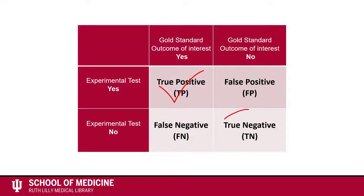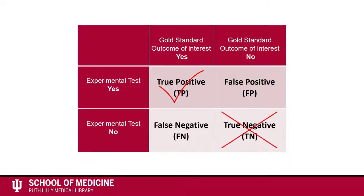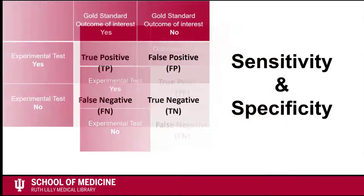Lastly, in the lower right-hand box, you will find the number of tests identified as negative by both the reference test and the experimental test. They are the true negative tests.